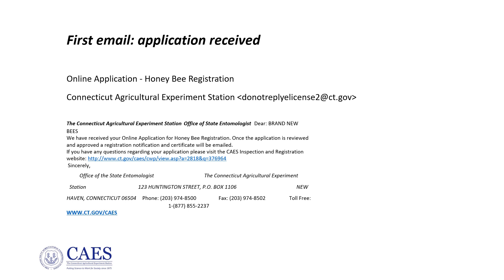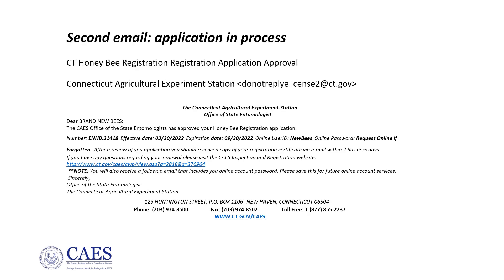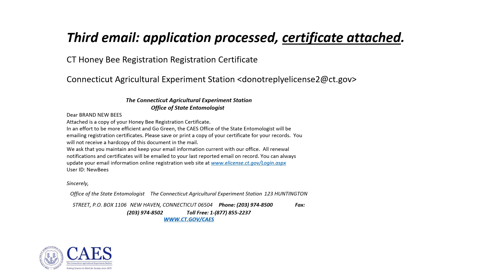Look for a confirmation email in your inbox — it may take anywhere from 15 minutes to 24 hours to arrive. It is confirmation that your application has been received. Remember to also check your junk mail folder, as sometimes communications from e-license end up there. This email confirms that your application is in process. Again, it may take 15 minutes to 24 hours for this message to arrive.